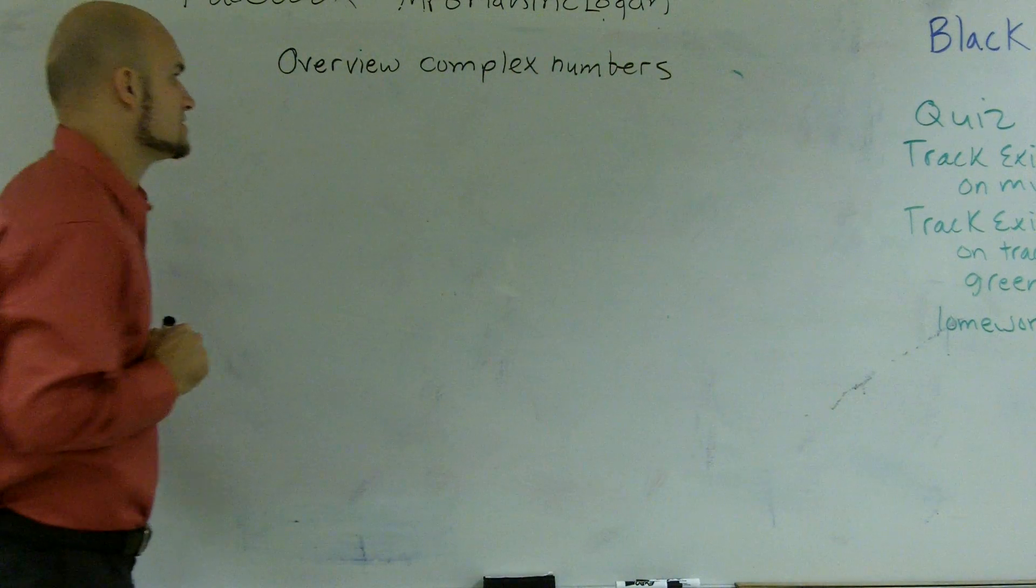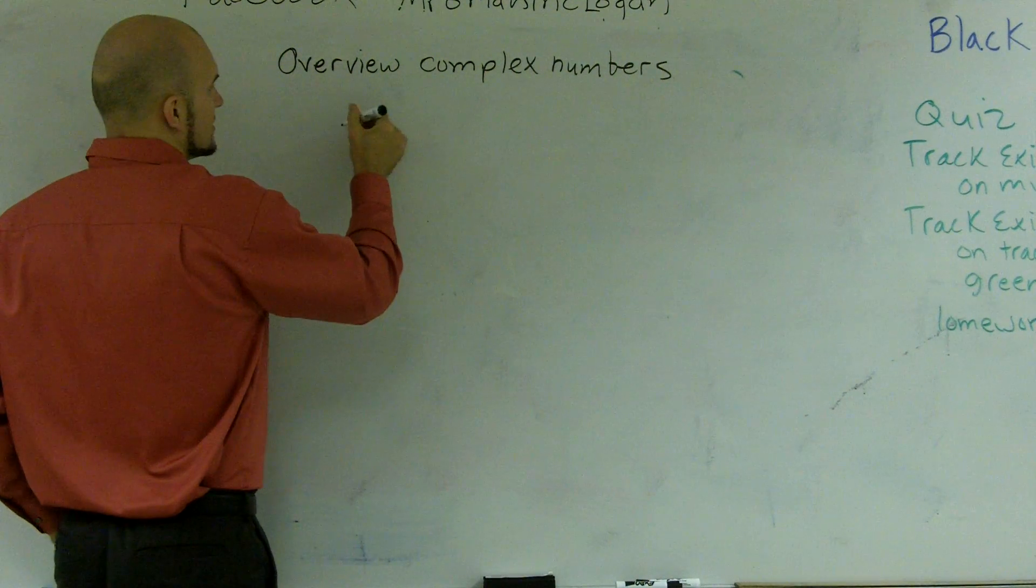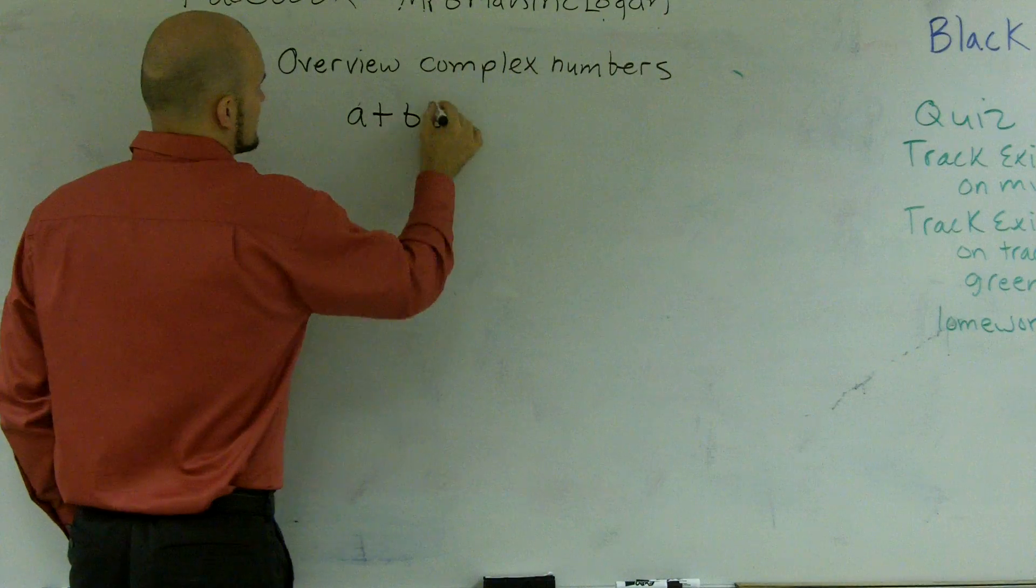Well, first of all, a complex number, or at least a standard form of a complex number, is a plus bi.